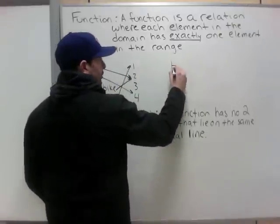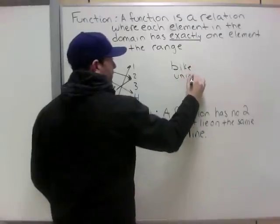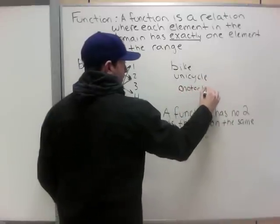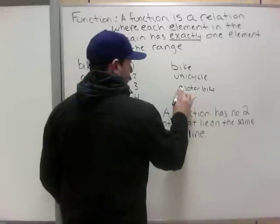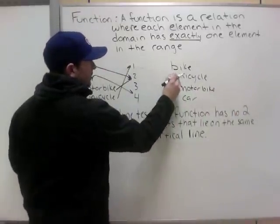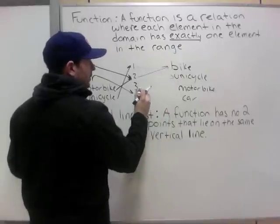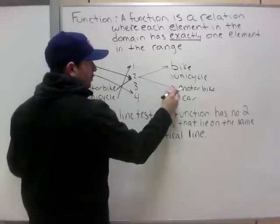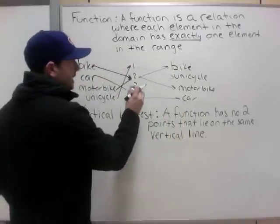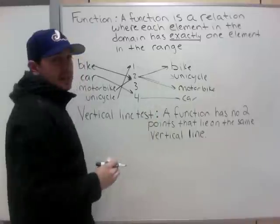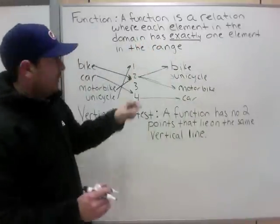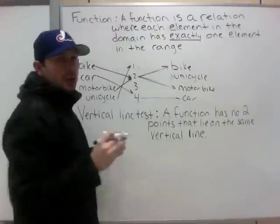What would not represent a function is this: one goes to unicycle, two goes to bicycle, two goes to motorcycle, four goes to car. This is not a function because there are two arrows coming off of the same domain element. The rule is each domain element has exactly one element in the range, and because domain two has more than one, it's not a function.